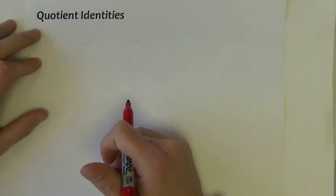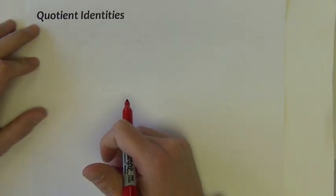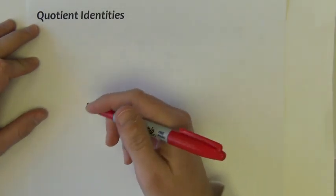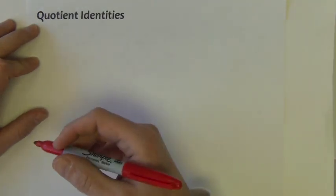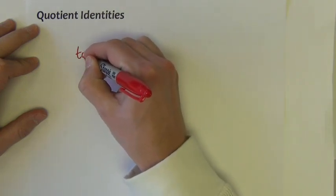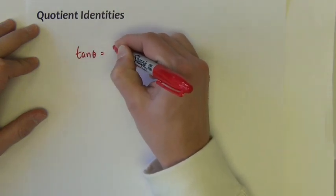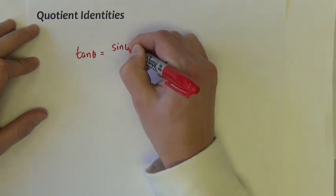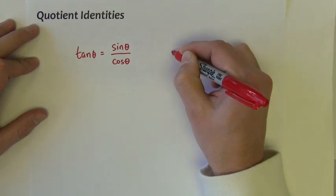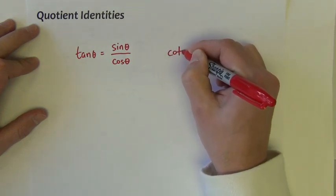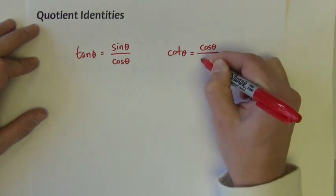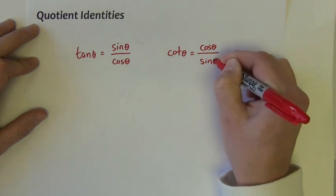The next set of fundamental identities are called the quotient identities. We only have two of these. We have tangent of theta equal to sine of theta divided by cosine theta. And we also have cotangent of theta equal to cosine theta divided by sine theta.